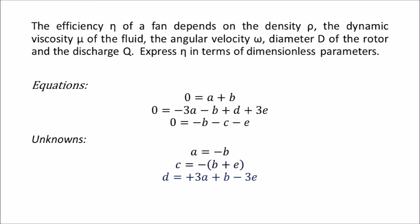And finally, from the second equation, we have that d is equal to 3a plus b minus 3e. And we can further simplify this final result by substituting our first result for a, which will give us that d is equal to negative 2b minus 3e.